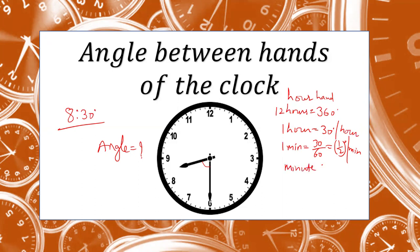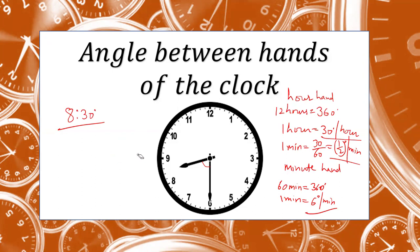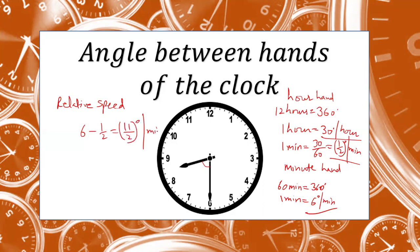If I talk about the minute hand, it covers a complete round in just one hour, that is 60 minutes. So in one minute it will cover 360/60, that is 6 degrees per minute. The speed of the minute hand is 6 degrees per minute and the hour hand is half a degree per minute. Since they are moving in the same direction, the relative speed of the two hands will be 6 minus 1/2, that is 11/2 degrees per minute.